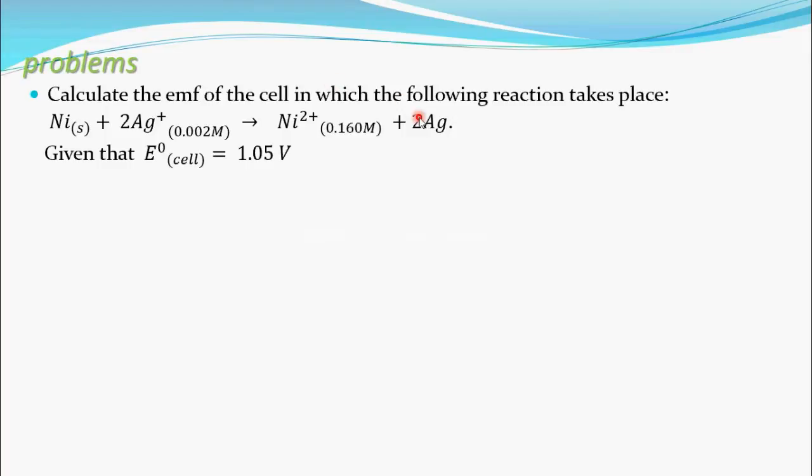Now we have to calculate EMF of this galvanic cell. Given E⁰ cell and he also given the concentration of the Ag⁺ in the reaction only, that is 0.002 molar, and concentration of nickel ion, that is 0.160 molar. You know that EMF of the cell can be calculated by the Nernst equation when the concentration is other than unity.